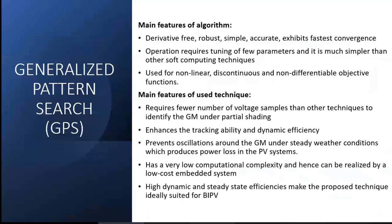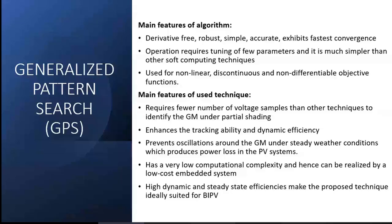The oscillations in GPS are much lower compared to other methods. In steady weather conditions, this produces less power loss on the PV system. The global maxima is gradually and steadily reached. Computational complexity is very low, requiring low computational power, making it a low-cost embedded system — highly suited and ideal for building-integrated PV systems where partial shading is a problem.